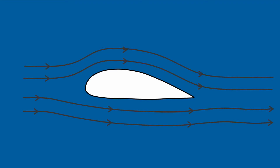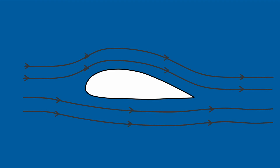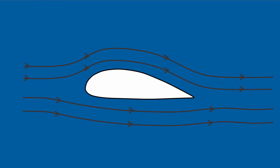Let's analyze the wing of a plane. The upper side of the wing is longer than the underside because of its curving, so the air over the wing passes a longer distance than the air under the wing in the same time. This makes the upper air faster.